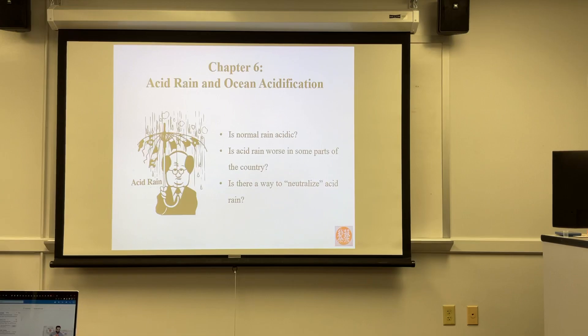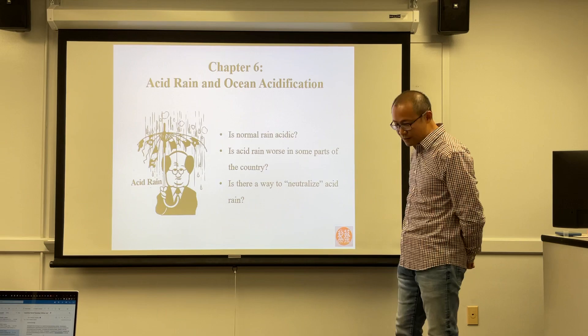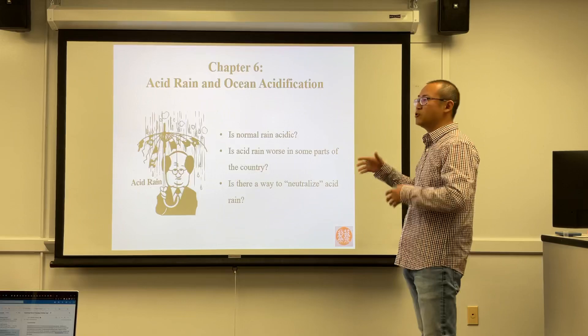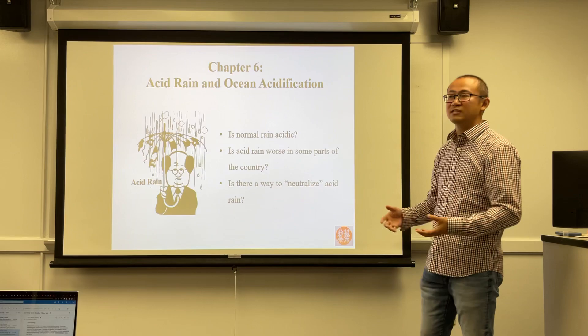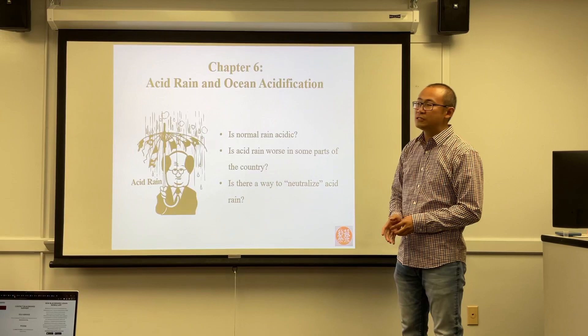Today we're going to start Chapter 6. The topic of this chapter is called acid rain and ocean acidification. We're going to talk about acids and bases, which are two important types of compounds in chemistry, and their connection to society topics like acid rain and ocean acidification.